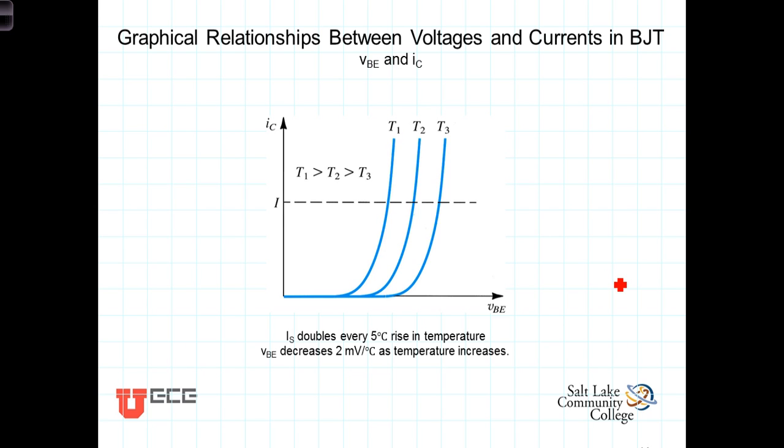In this video, we're going to look at the different relationships between currents and voltages in the BJT transistor. We'll look at the effects of the voltage across the PN junctions, as well as the voltages across the collector-to-emitter terminals, and also the terminal currents I sub C, I sub B, and I sub E.